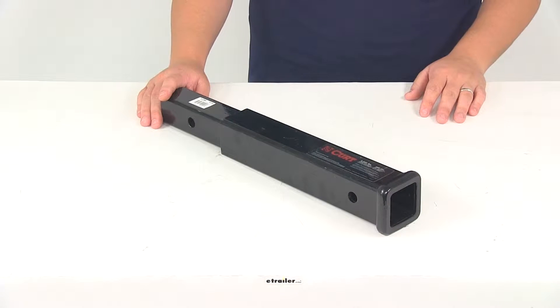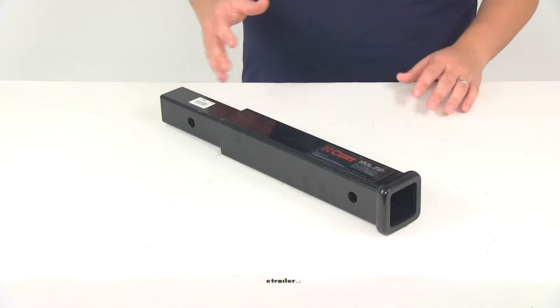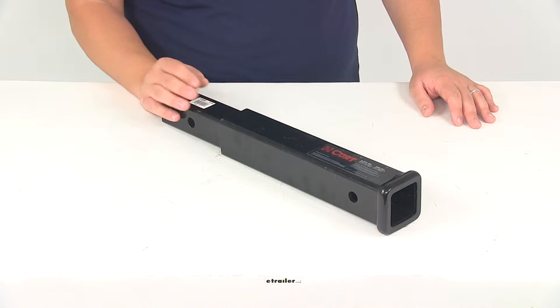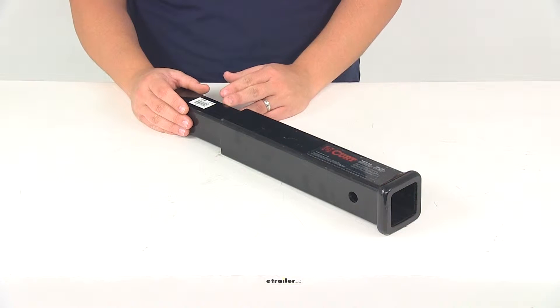That way you can get some extra clearance for your trailer if you have some mounted accessories that you need to clear. Or you could use this to mount your bike rack or cargo carrier without having to remove your rear mounted spare tire.